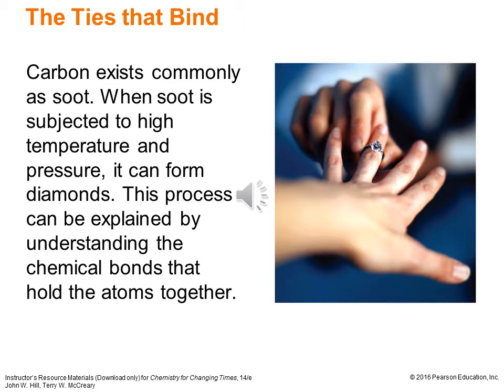Looking at carbon as a good example — carbon exists commonly as soot, a dark, soft material. But if that soot is subjected to high temperature and pressure, it can form diamonds, which are the hardest material known. They're also essentially colorless in a very pure state, separating light into its colors. Sometimes impurities give colors like yellow or blue, making a diamond less or more valuable depending on the buyer. So how do we get soot to become something very hard and essentially colorless? It has to do with the bonding — how carbon bonds with itself and the different forms of carbon possible based on how those chemical bonds hold the atoms together.